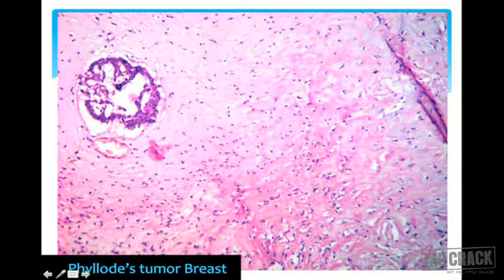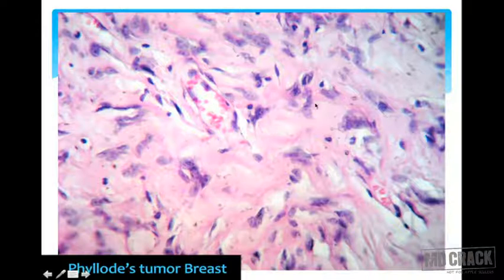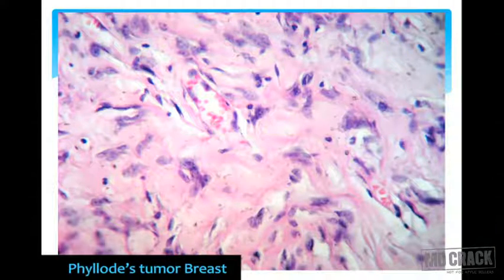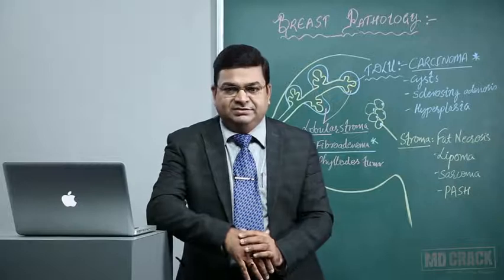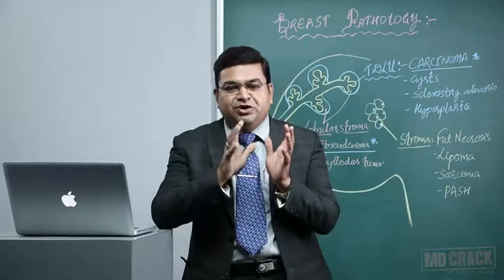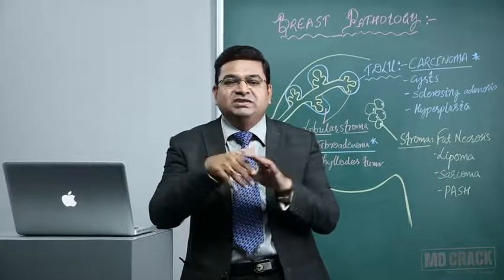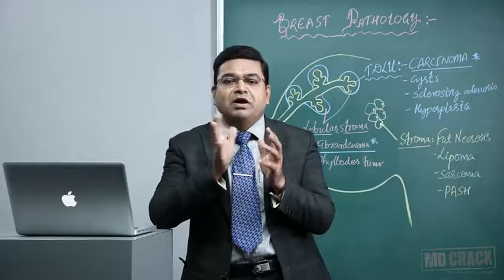In phyllodes tumour, the stroma is made up predominantly of spindle cells in fibrocollagenous tissue. Sometimes it shows rich vascular channels — this entity is called PASH, pseudoangiomatous stromal hyperplasia. The presence or absence of mitotic figures decides whether the tumour is benign or malignant phyllodes. Even benign phyllodes tumours are known for recurrences if not completely excised. The treatment of choice is wide surgical excision, unlike simple lumpectomy for fibroadenoma.